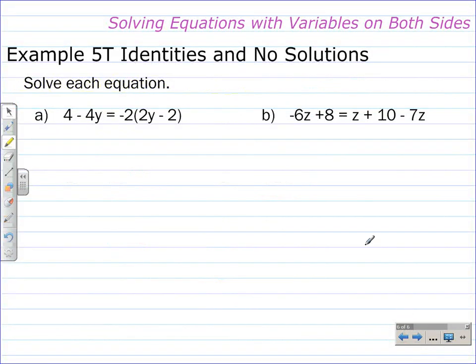In example 5T, we're going to be discussing identities and no solutions. We're going to discuss what those mean after we solve each of these equations.